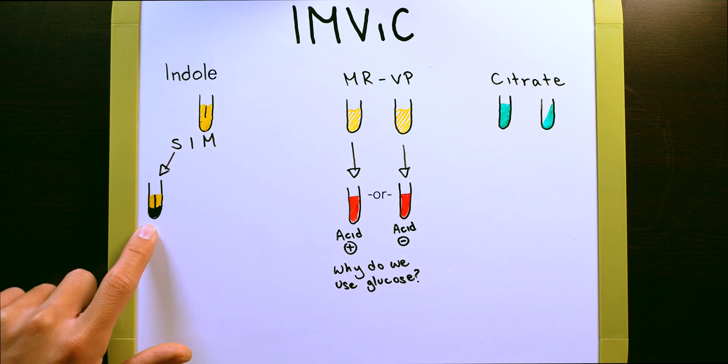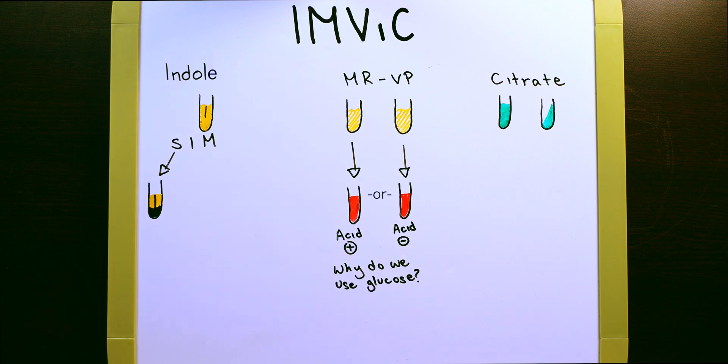Firstly, sulfur. If in your test tube, you have some sort of black precipitate, it doesn't matter how little or how much. If you have black precipitate, this is indicative of a positive sulfur test.